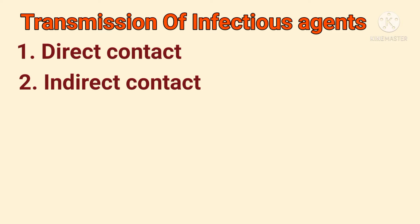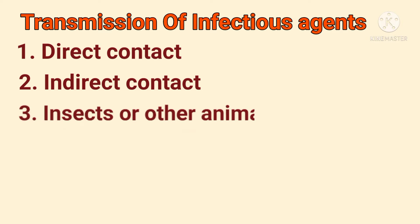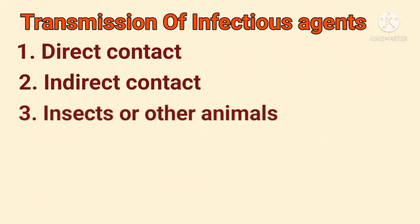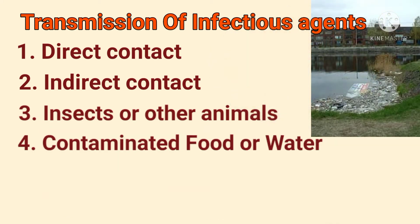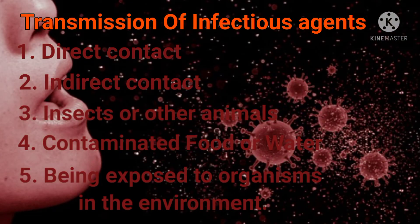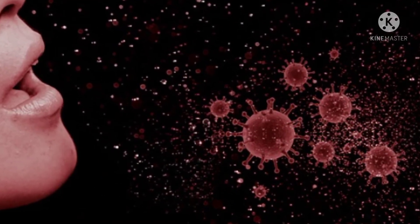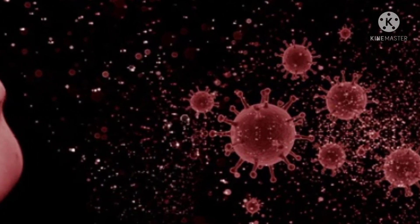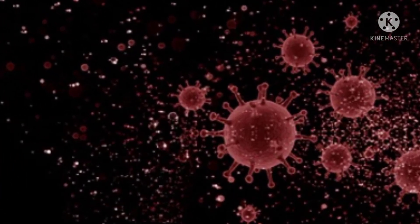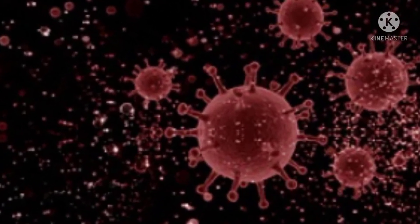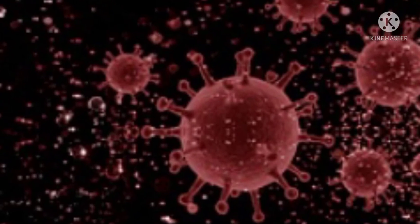Some infectious diseases are transmitted by insects or other animals, some by consuming contaminated food or water, and some by being exposed to organisms in the environment. Up to this we learned what are infectious diseases, infectious agents, and how infectious diseases spread. Next we'll see what are endemic, epidemic, pandemic, and sporadic diseases.